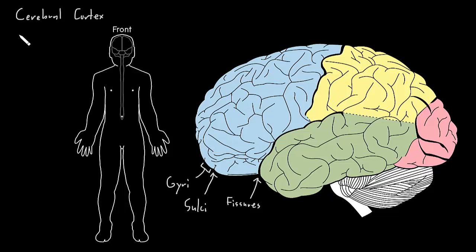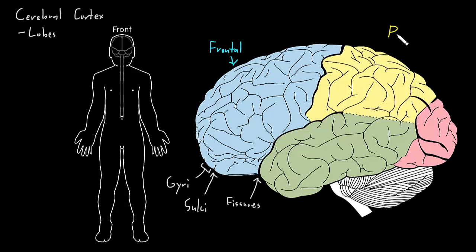We divide the cerebral cortex into lobes, named the same as the bones of the skull over those areas. The big lobe in the front, under the frontal bone, is the frontal lobe. The one behind it, next to the parietal bone, is the parietal lobe. The one on the other side of the large fissure, by the temporal bone, is the temporal lobe.